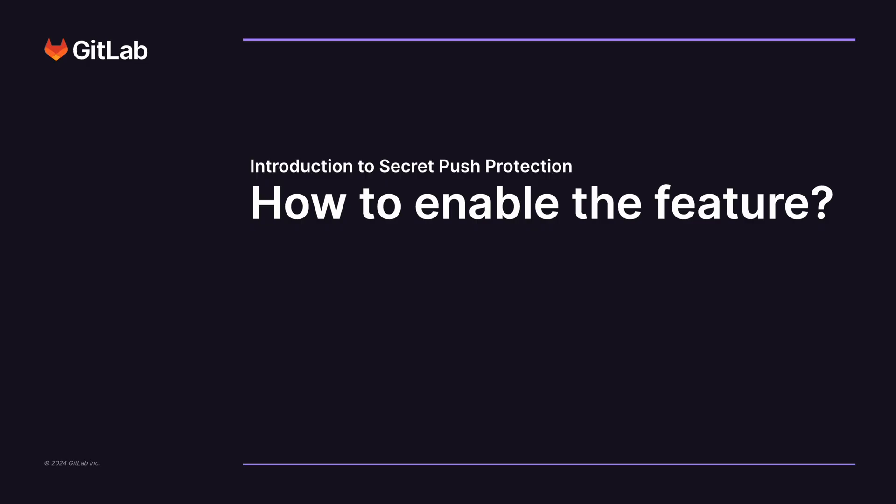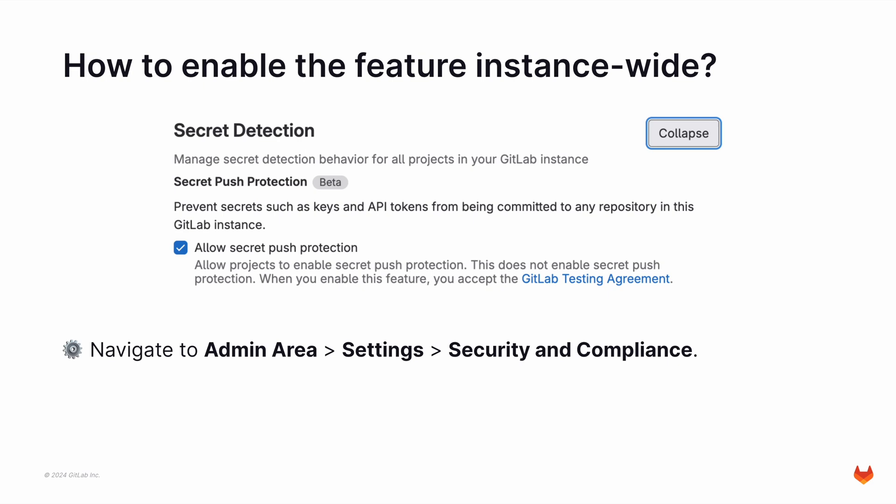How to enable the feature. This depends on whether you are enabling this on GitLab.com or GitLab Dedicated. For GitLab.com, the feature would already be enabled instance-wide, so you could skip to the next section. If you are enabling this on GitLab Dedicated, you would have to make sure the feature is enabled first at the instance level. This is usually done by the administrator of your instance.